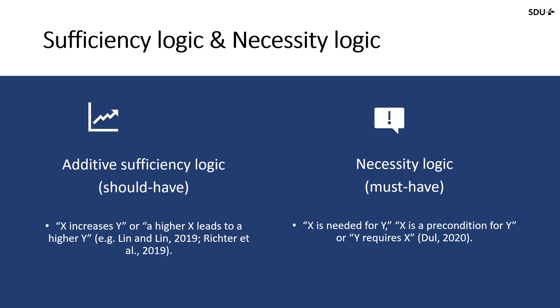While a determinant, for example enjoyment, may be sufficient to produce the outcome, for example the use of technology, it may not be necessary. The absence of enjoyment could be compensated by other determinants, for example a positive evaluation of the technology's usefulness.